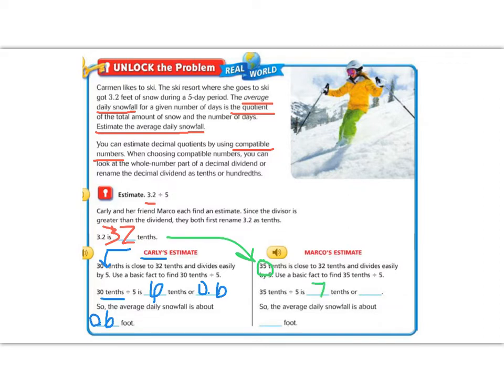But remember this is tenths, 7 tenths. So we're going to write this as 0.7, 7 tenths. So the average daily snowfall is about 0.7.